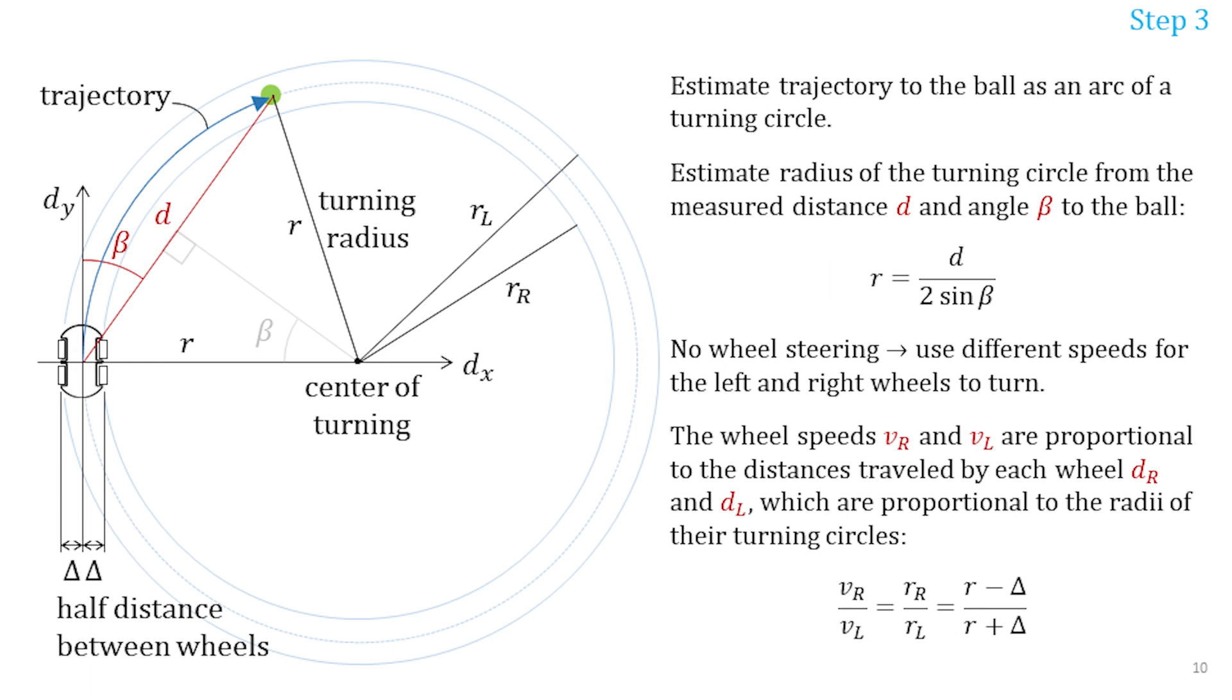Because the wheels on the Elegoo car cannot be steered the only way to make a turn is by setting different speeds on the left and the right wheels. So I needed to derive the ratio of these speeds based on the desired turning radius. The math level of this problem was above my level and my dad helped me a lot. For those interested in derivations they're shown on the screen.